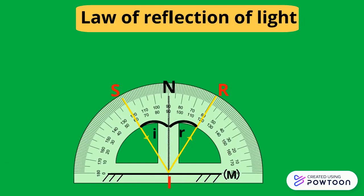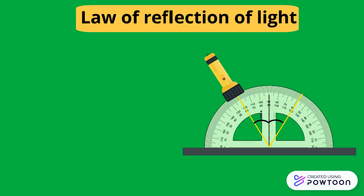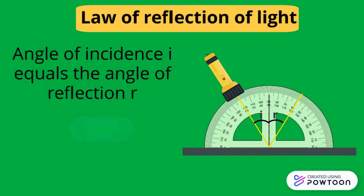Using a protractor we compare the angle of incidence and the angle of reflection. We conclude that the angle of incidence is equal to the angle of reflection: i equals r. This is the law of reflection of light.